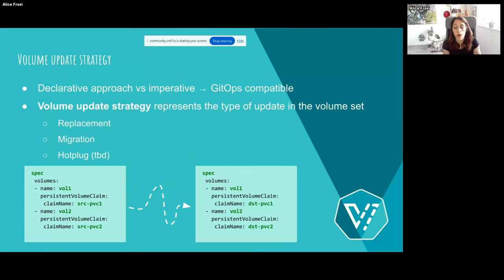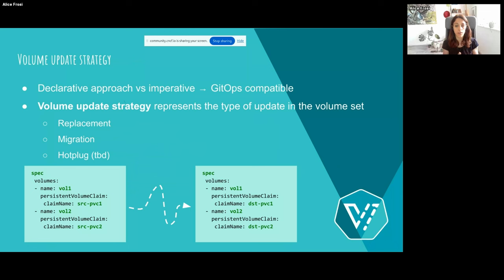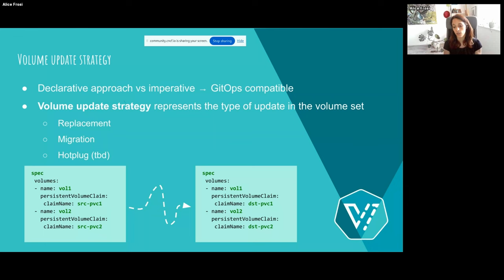How are we implementing this feature? Something I really want to stress is that we are trying to have a declarative API — this was a key concept during the design of this feature because we want to be GitOps compatible. We always want to have a declaration, like a YAML, that describes your VM. We trigger the change when there is a change in the volume set. You can see an example: on the left we have two volumes with source-pvc1 and source-pvc2, and we want to change to destination-pvc1 and destination-pvc2.